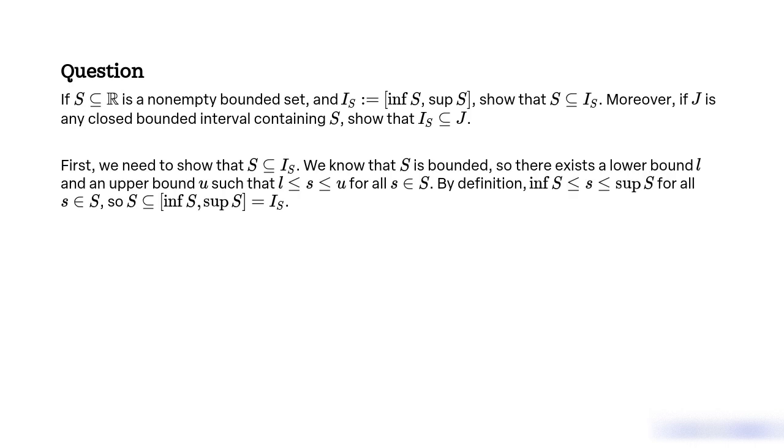First, we need to show that S ⊆ IS. We know that S is bounded, so there exists a lower bound L and an upper bound U such that L ≤ s ≤ U for all s ∈ S. By definition, inf S ≤ s ≤ sup S for all s ∈ S. Therefore, S ⊆ [inf S, sup S] = IS.